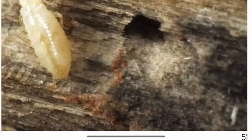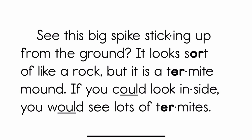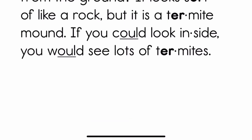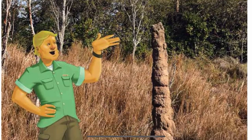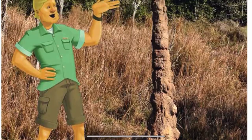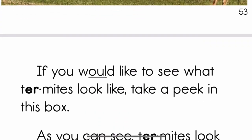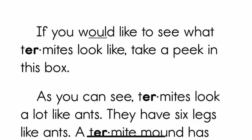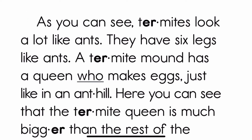You can see the termites munching on this wood. Now see this big spike sticking up from the ground — it looks sort of like a rock, but it is a termite mound. If you could look inside, you would see lots of termites. Take a peek in the box to see what termites look like. Termites look a lot like ants and have six legs like ants.